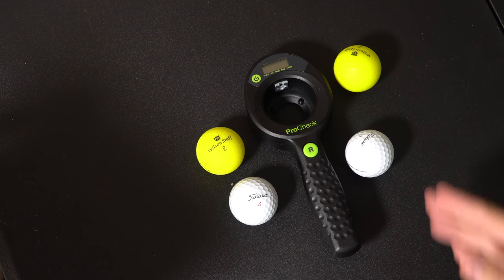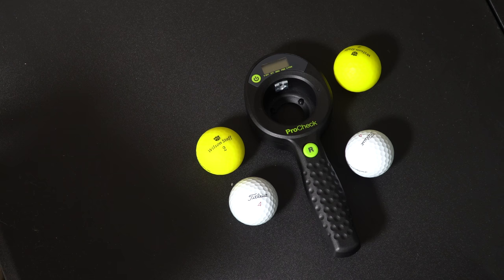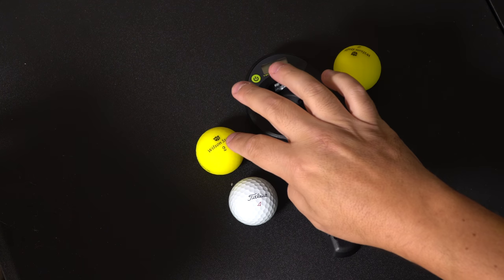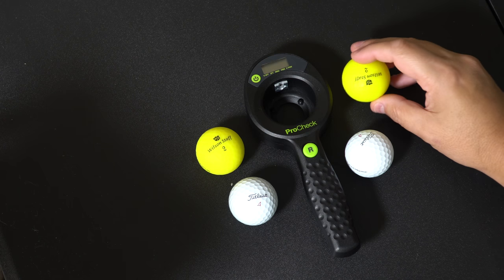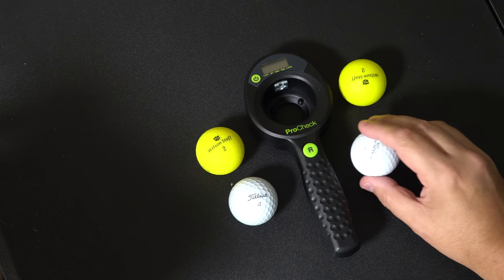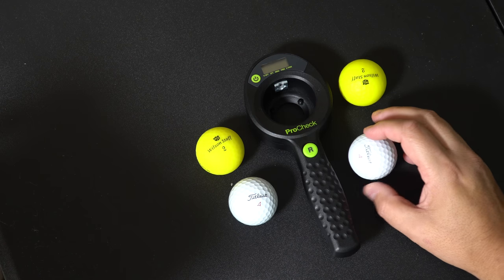Hey guys, what you're looking at is the ProCheck Golf Ball Compression Test and a Wilson Duo Optics, a Titleist Pro V1X, and then a Wilson Duo Optics and a Titleist Pro V1X that have been in the freezer for the last five hours.